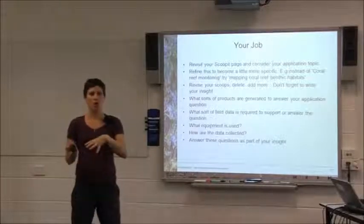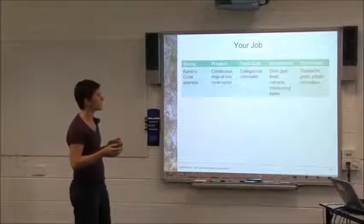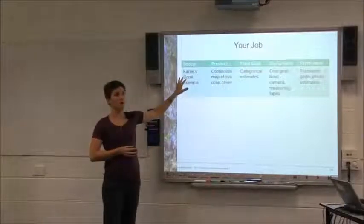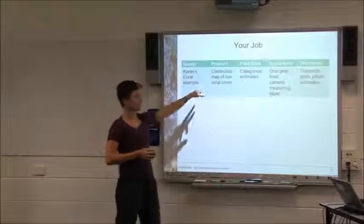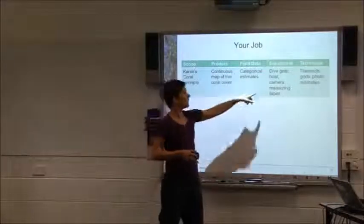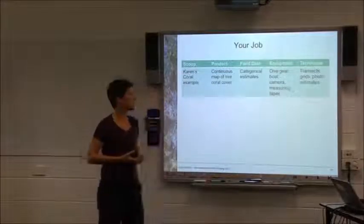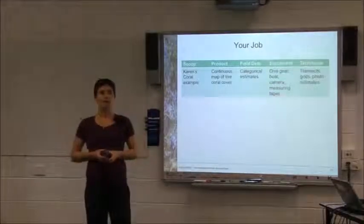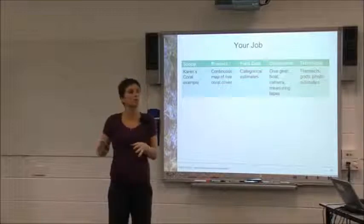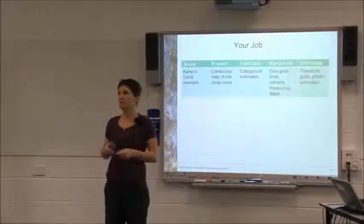If you're posting a scoop on a coral reef application, add in this information for that particular scoop. Another way to look at it is to develop yourself a table. Based on the scoop — using my coral example — the product was a continuous map of live coral cover. The field data needed were categorical estimates at particular locations. The equipment was dive gear, a boat, a camera, and measuring tapes. The techniques were transects, grids, and photo estimates. I'd like you to jump up, find the table that matches your topic as closely as possible, and sit around people with like minds. Then log into your Scoop It page and start to think about these things.